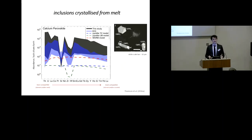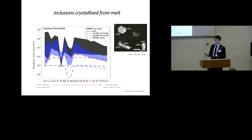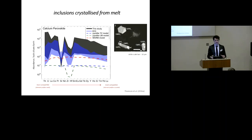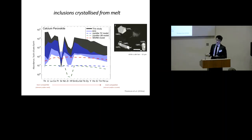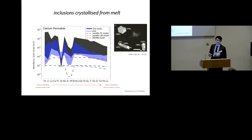We can also look at the trace element geochemistry of the inclusions. Plotting the trace element abundance of the calcium silicate perovskite inclusions relative to the average composition of the bulk silicate earth, a solid calcium perovskite assemblage would have a composition represented by the red dashed line at most - more likely the green and blue dashed lines. The inclusions we observed are hugely enriched, up to 100,000 times more than expected, and the only real way to achieve this is by crystallising a melt which can concentrate those elements to very high amounts.